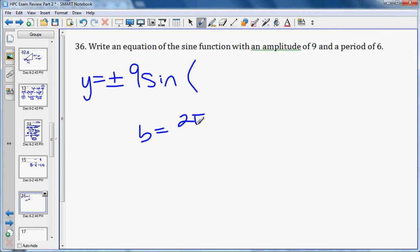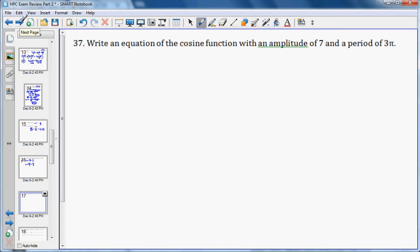Same process here, except we're doing cosine. We'll do y equals plus or minus the amplitude, which is 7, cosine. To get B, which is the number in front of x that'll go inside the parentheses, we do 2π over 3π. Because you do 2π over the period, the π's cancel, leaving you just two-thirds.